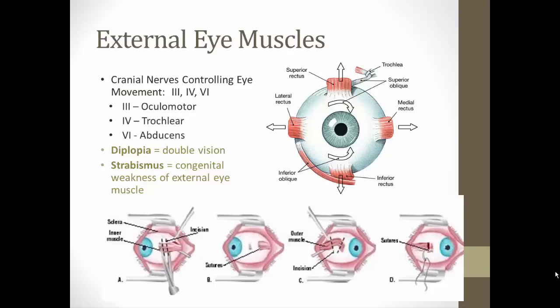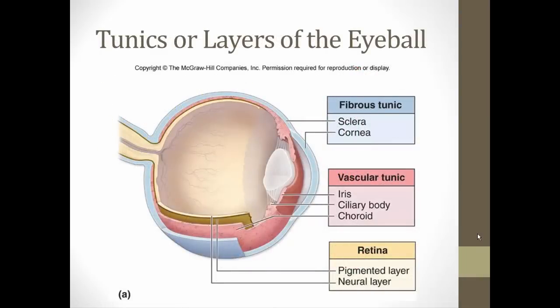Problems with the external eye muscles can lead to diplopia, or double vision, or a congenital weakness of the eye muscles called strabismus, more commonly known as lazy eye. To surgically fix this, the eye doctor cuts out a section of that muscle and reattaches it to shorten it, compensating for the weakness of that eye muscle.